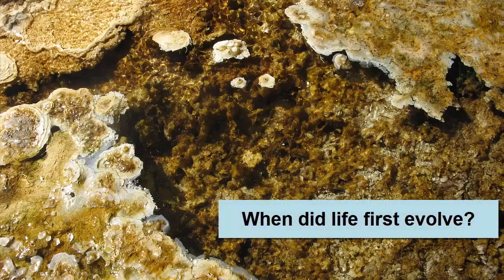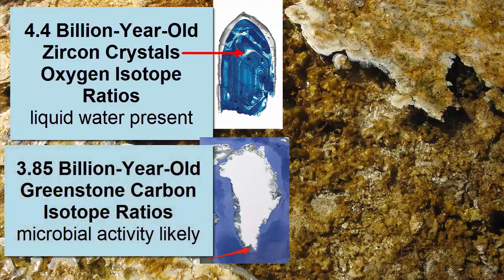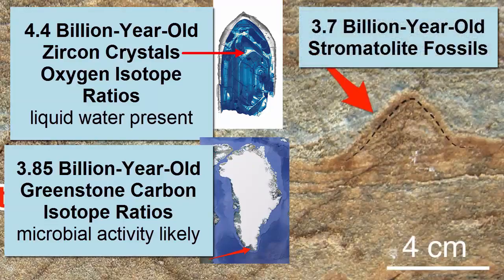When did life first evolve on planet Earth? Oxygen isotope ratios in 4.4 billion year old zircon minerals indicate temperatures on the surface would have been cool enough for liquid water to be stable. Since life requires water, 4.4 billion years represents a possible oldest date for life on Earth. A 3.85 billion year old rock from Greenland was found to have carbon isotope ratios suggestive of microbial activity. However, the first fossil evidence we have are stromatolite mounds found in 3.7 billion year old rocks from Greenland.